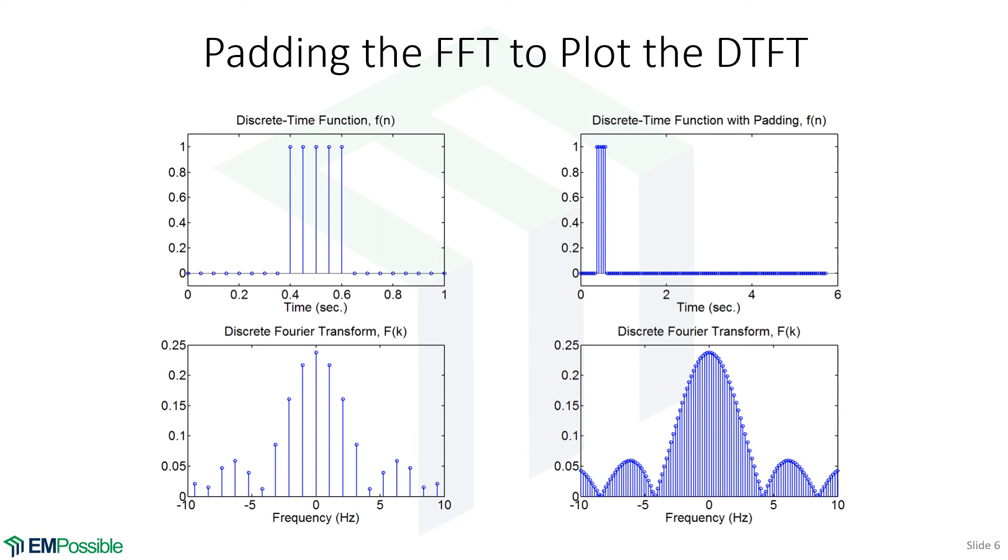So padding does not give us more information. Just like this square wave is what it is. Adding these zeros does not give us more information about this square wave function. It just makes it so our discrete Fourier transform looks a bit like a discrete time Fourier transform if we were to plot this as a continuous line. I hope this was helpful.